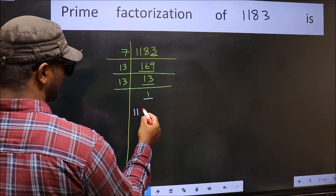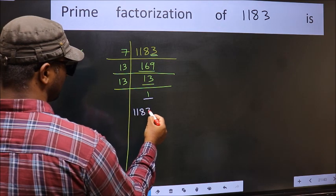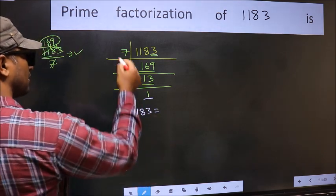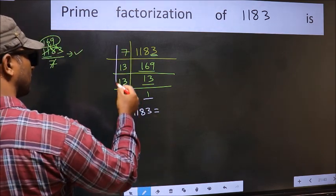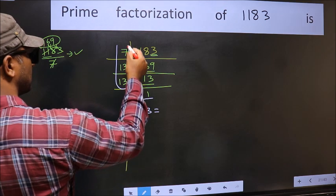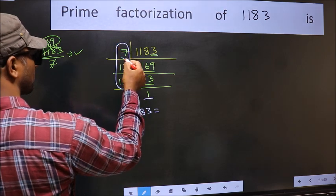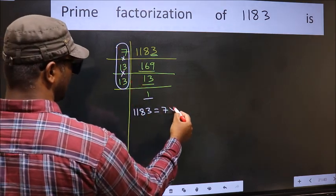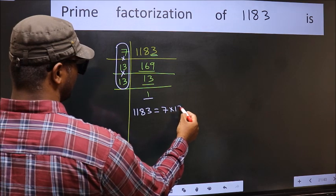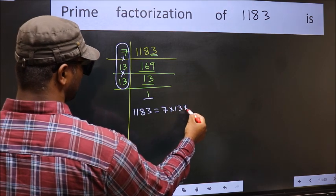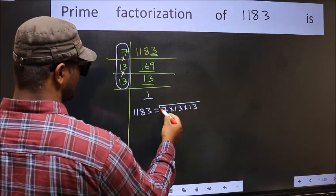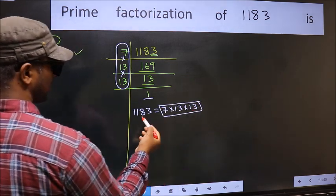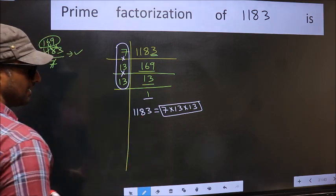So the prime factorization of 1183 is the product of these numbers. That is 7 into 13 into 13. This is the prime factorization of 1183.